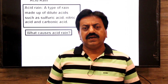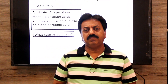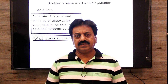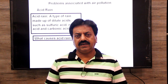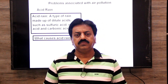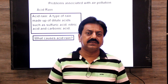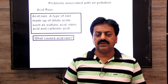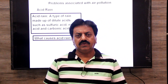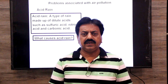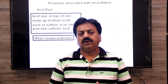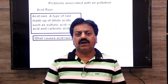Now we come to its causes. What causes acid rain? Acid rain is caused by three oxides: first sulfur dioxide, second nitrogen dioxide, and third carbon dioxide. When these oxides go into the air due to the burning of fossil fuels, and if there are clouds there...